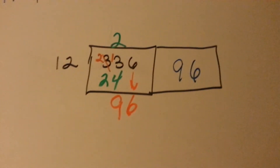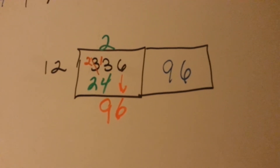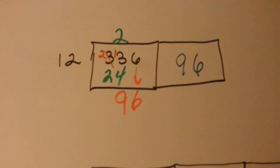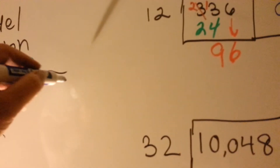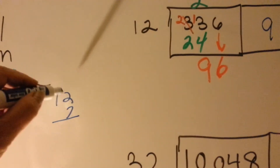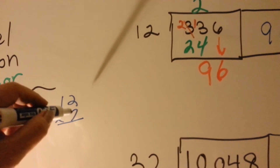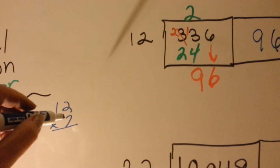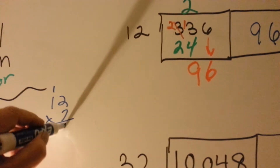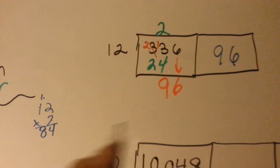And we ask ourselves, how many times can 12 go into 96? If you don't know, you can do math on the side. Let's try 12 times 7 and see if that's big enough. 7 times 2 is 14, carry the 1, put the 4 down — 7, 8. Hmm, that's not big enough.